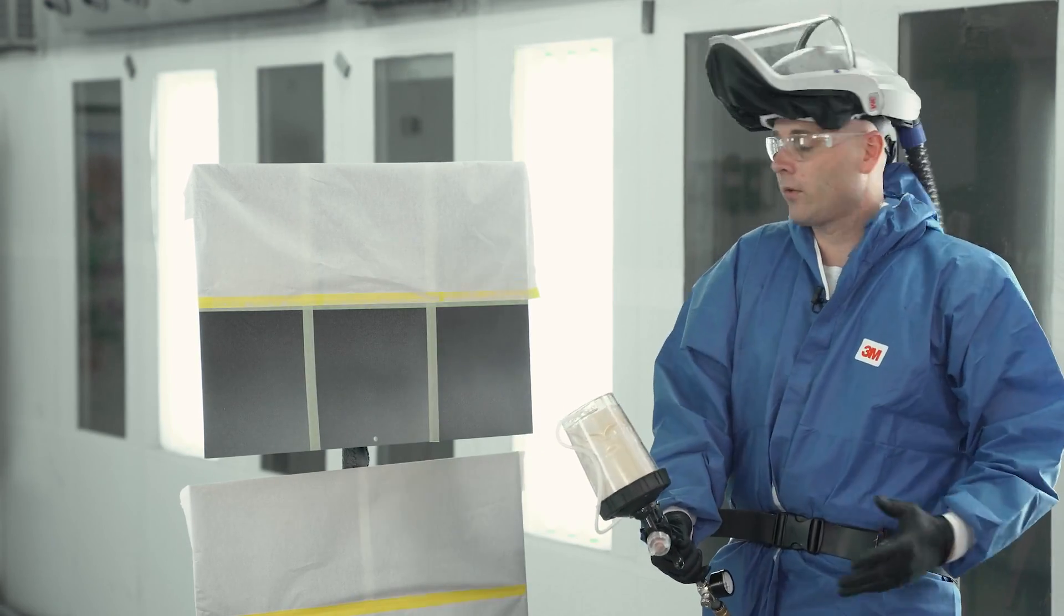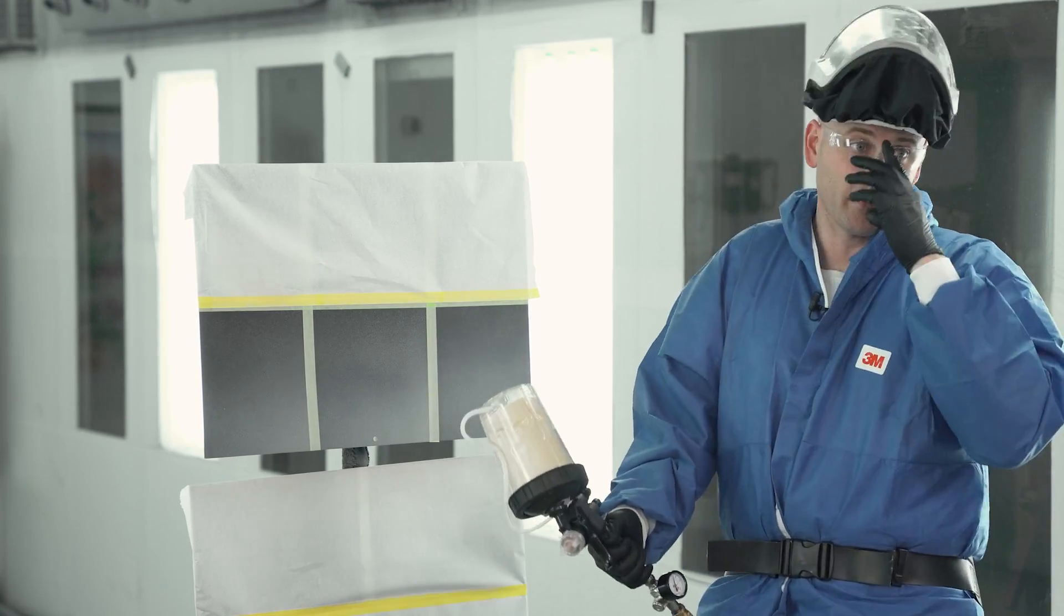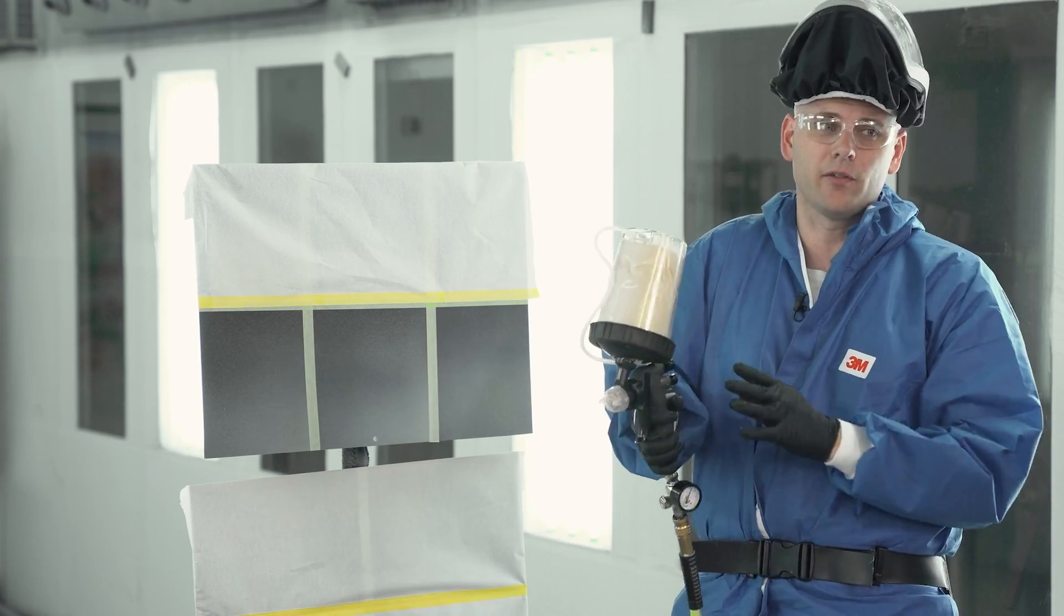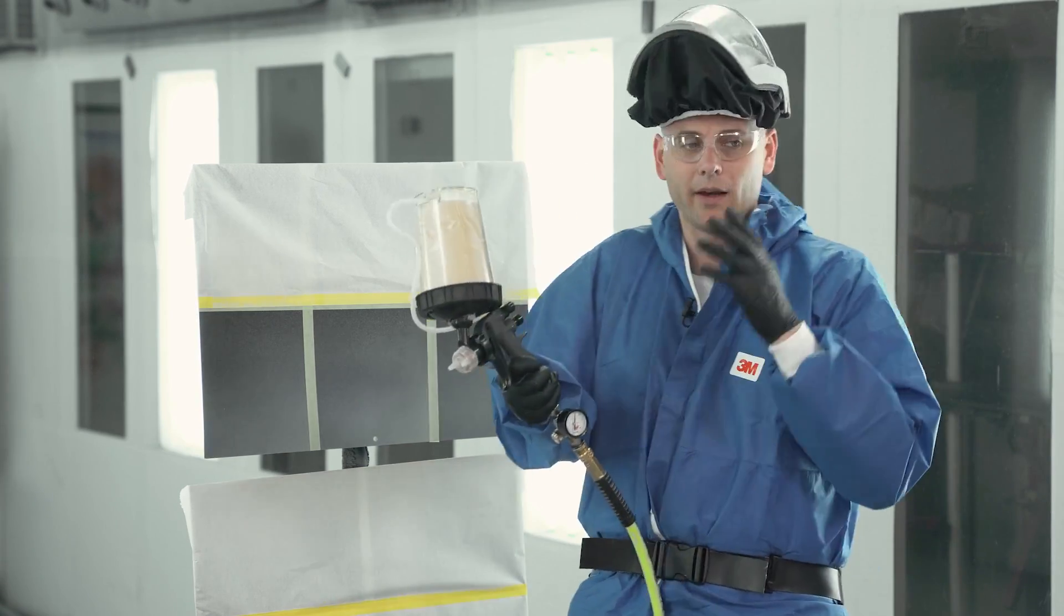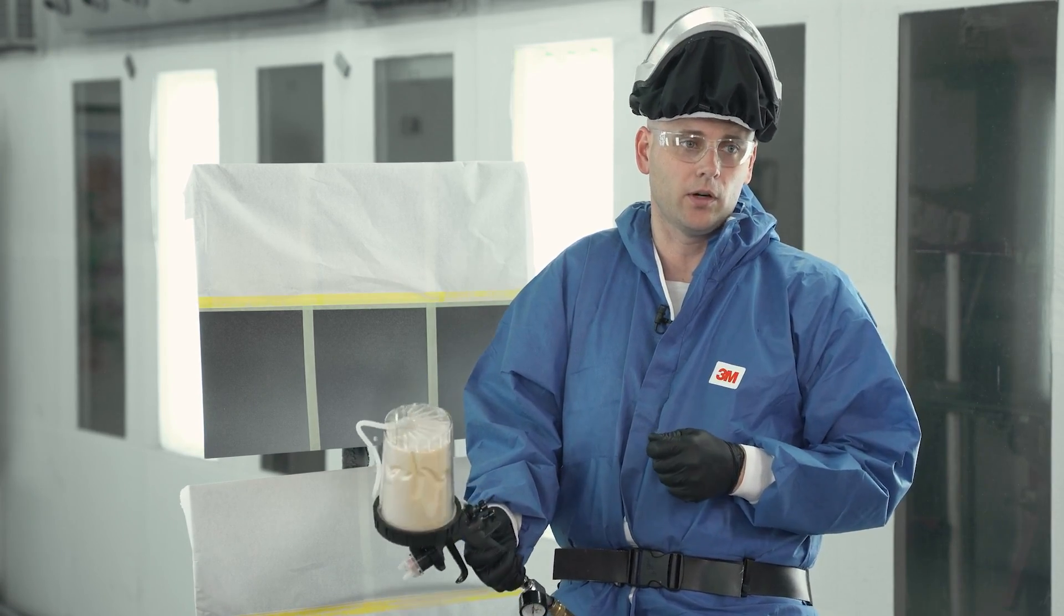So now our second coat is applied, so we're moving from a fine to a medium texture. The last thing we're going to do is apply the coarse texture on the bottom. So I'm going to go ahead and make a few more adjustments to my gun. I'm going to take a little more pressure off, and I'm also going to open the fluid just a little bit more.